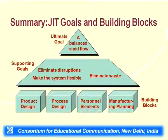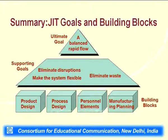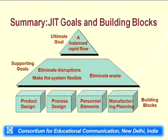The JIT goals and building blocks start with the ultimate goal: a balanced rapid flow. There should be a smooth flow of items in the operations department. Supporting goals are eliminate disruptions, make the system flexible, and eliminate waste. These are achieved through product design, process design, personnel elements, and manufacturing planning — the building blocks required to implement JIT in operations.